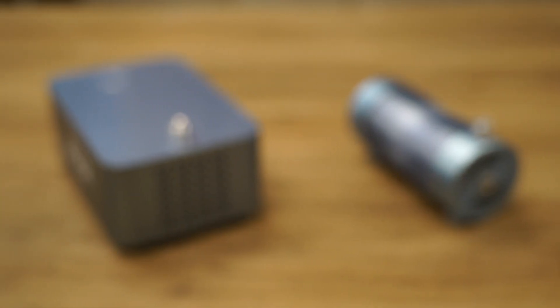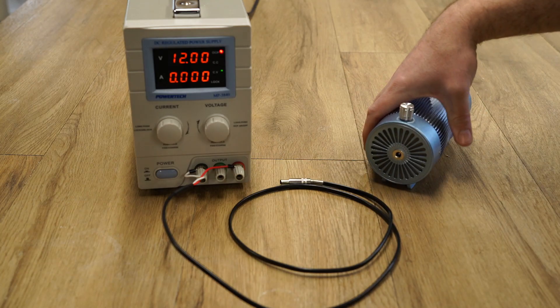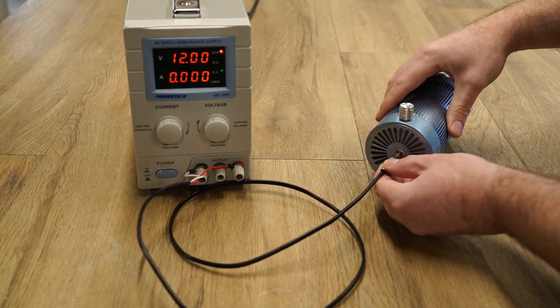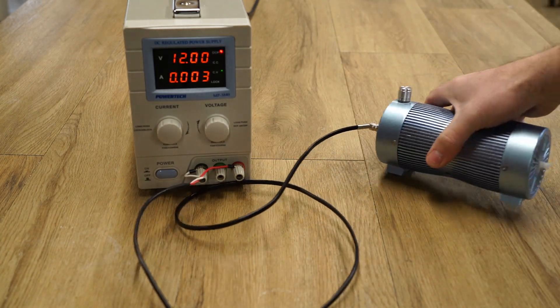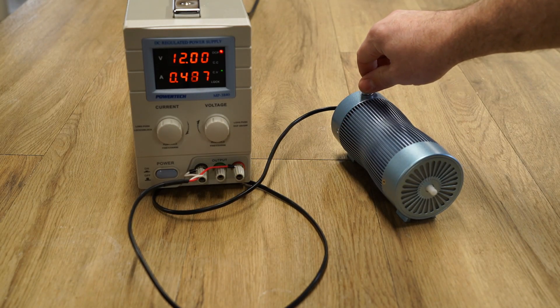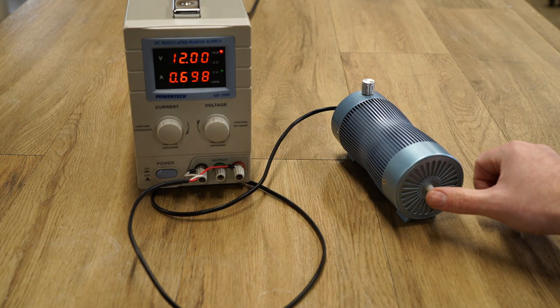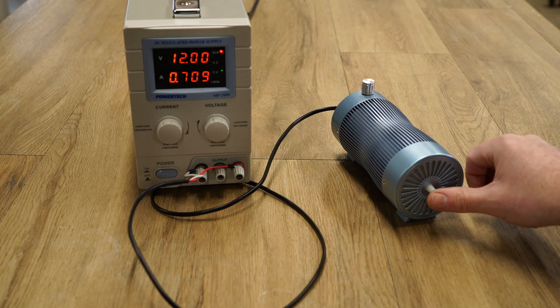Before we conclude the video I wanted to see how these two air compressors compared to one another. First I connected the air compressor up to my power supply to measure the current draw. The Ultra compressor was consuming around 700 milliamps and around 1,500 milliamps with some back pressure.